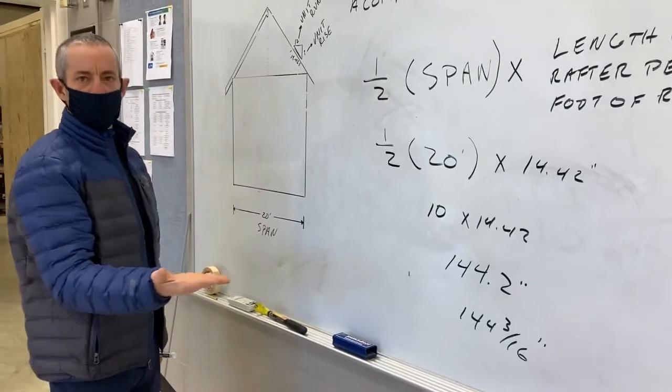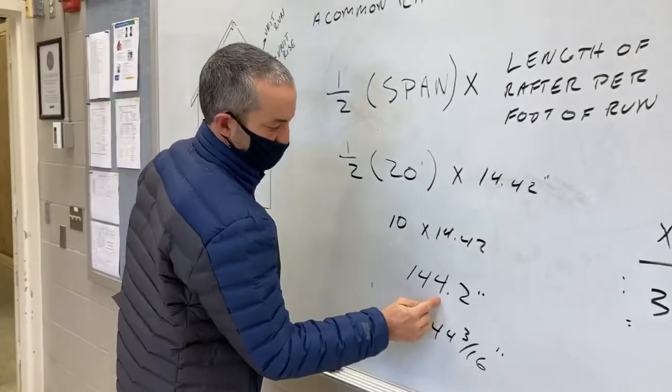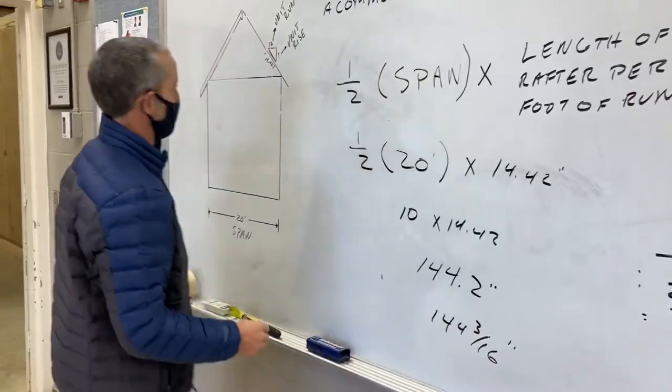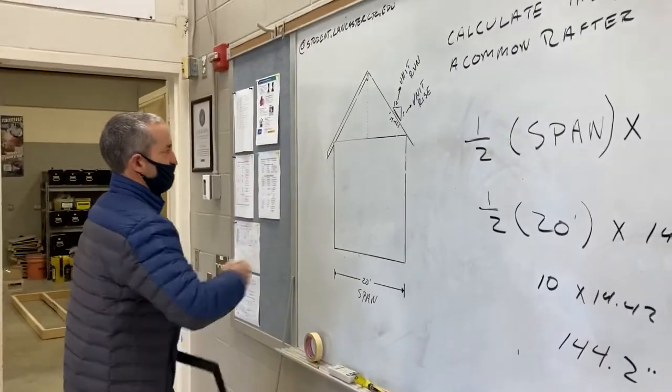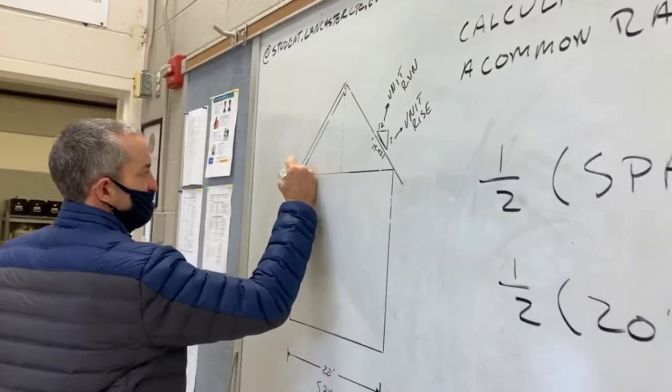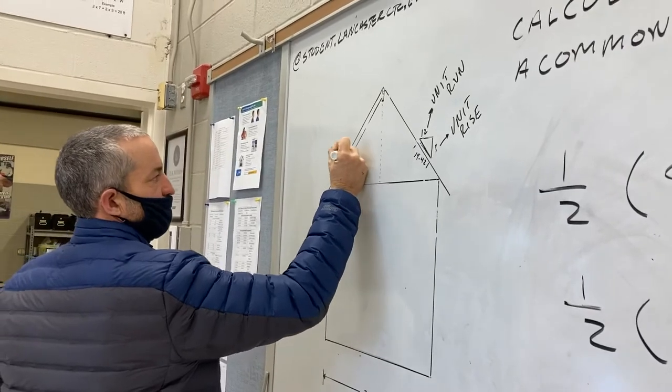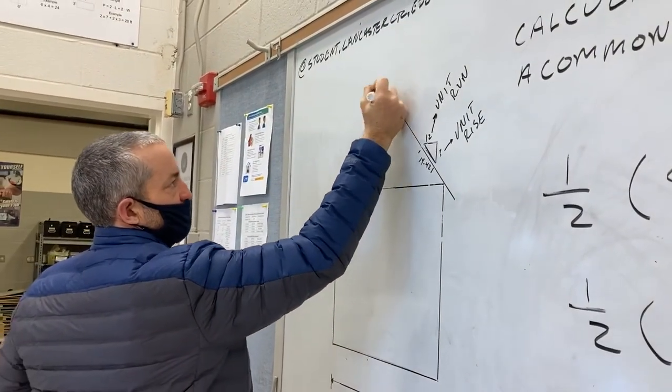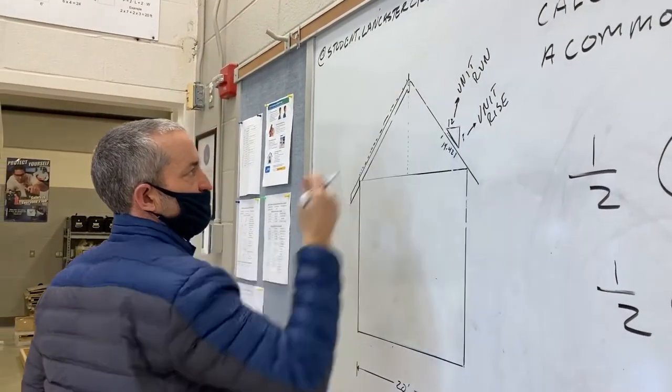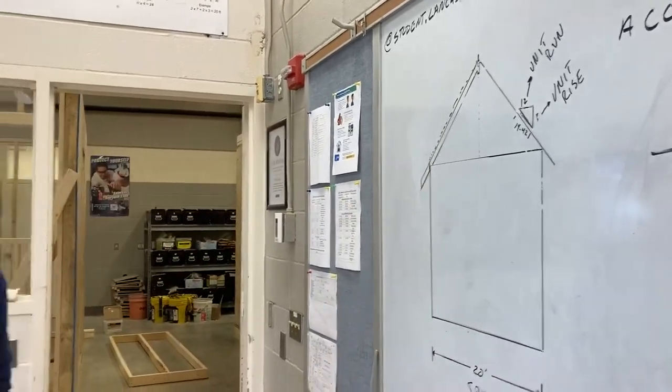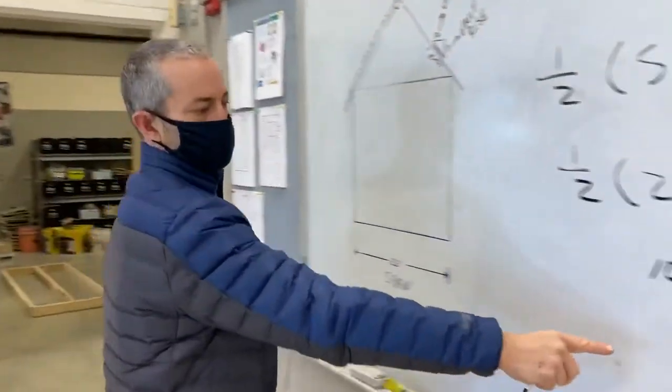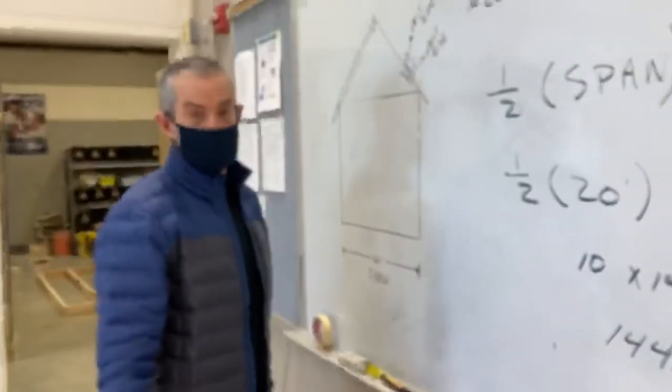Well, 10 times 14.42 is 144.2 inches. That is the length of our rafters from the outside of the house, the whole way up here to the center of our building. That's what we refer to as the line length of our rafter. It's 144.2 inches. It's that simple. It's not that complicated.